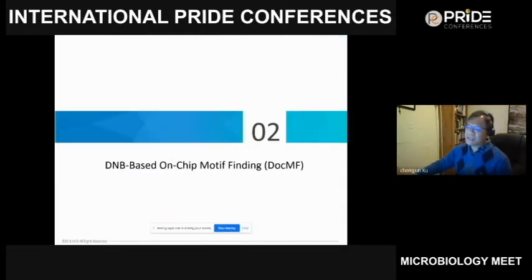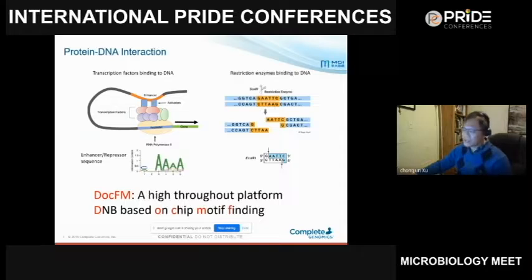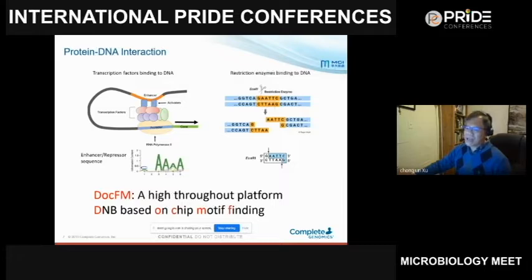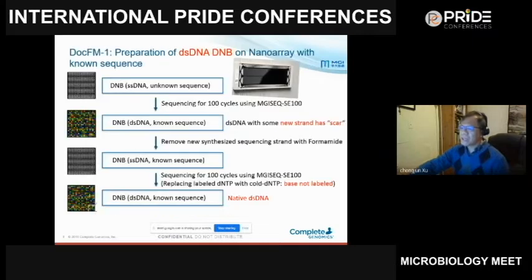We are introducing the DNB-based on-chip motif finding, which we call DocMF. This technology checks interactions between proteins and DNA. Protein-DNA interactions can be classified into two kinds: one is non-cleavage binding, such as transcription factors binding to specific sites like TATA boxes; the other involves enzymes like restriction enzymes that bind to DNA and cut it. The goal of DocMF is to identify both binding sites and cleavage sites.